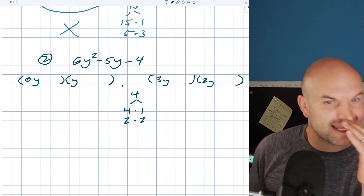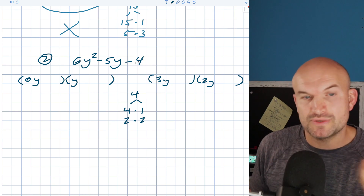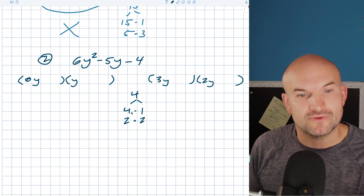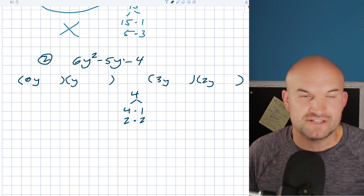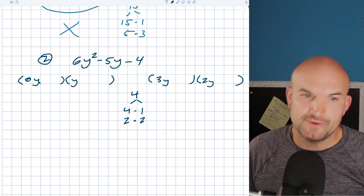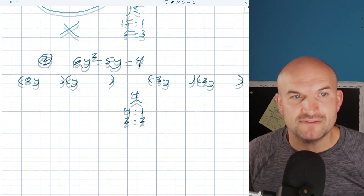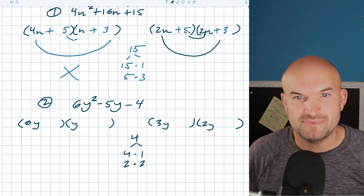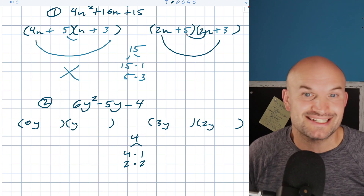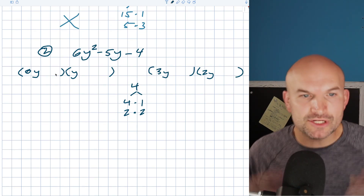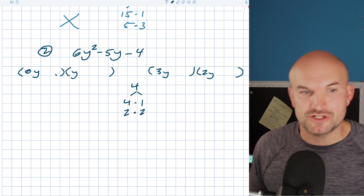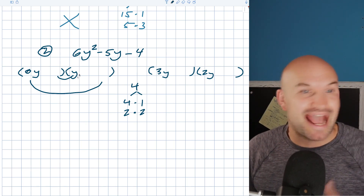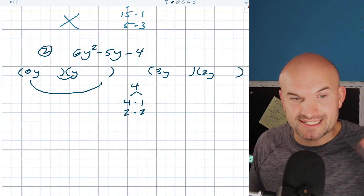Now we get a little bit more difficulty here because my last number is negative. So when your last number is negative, one of your factors is positive and one of your factors is going to be negative, because 4 times 1 or 2 times 2 — one of those has to be negative to give us a negative 4. So now instead of looking at the sum of your two factors, we're going to find the difference of our two products. That's why a lot of times these can be even more difficult — rather than adding up the two products, we're going to find the difference of them.